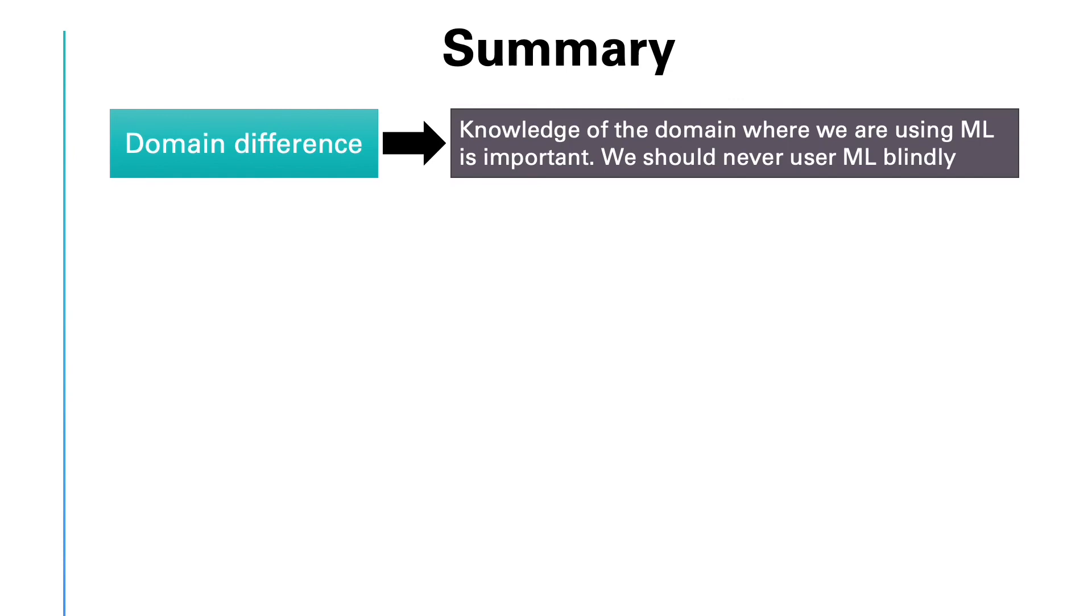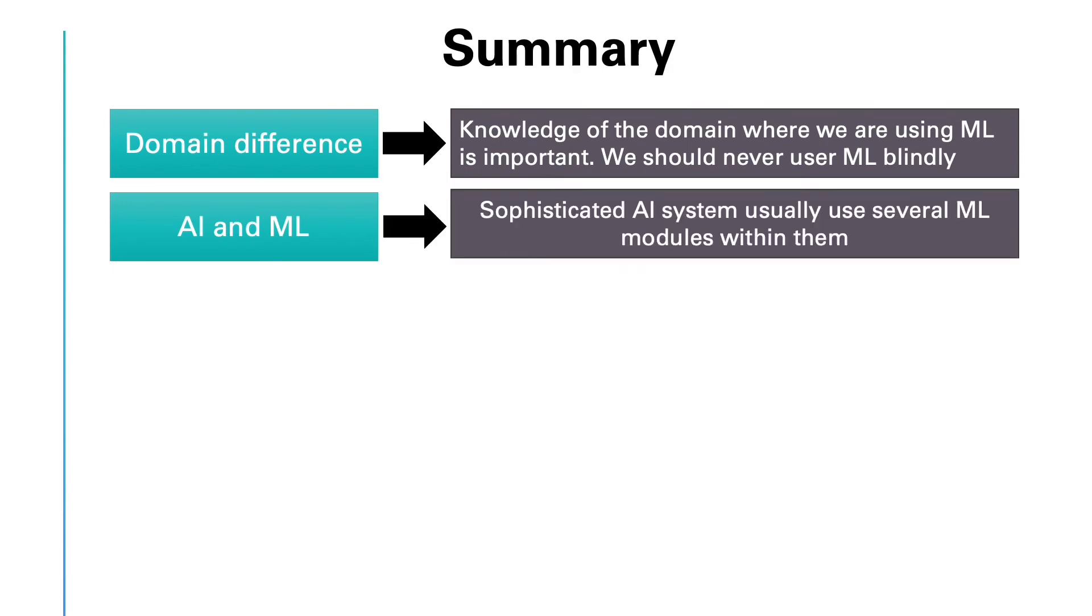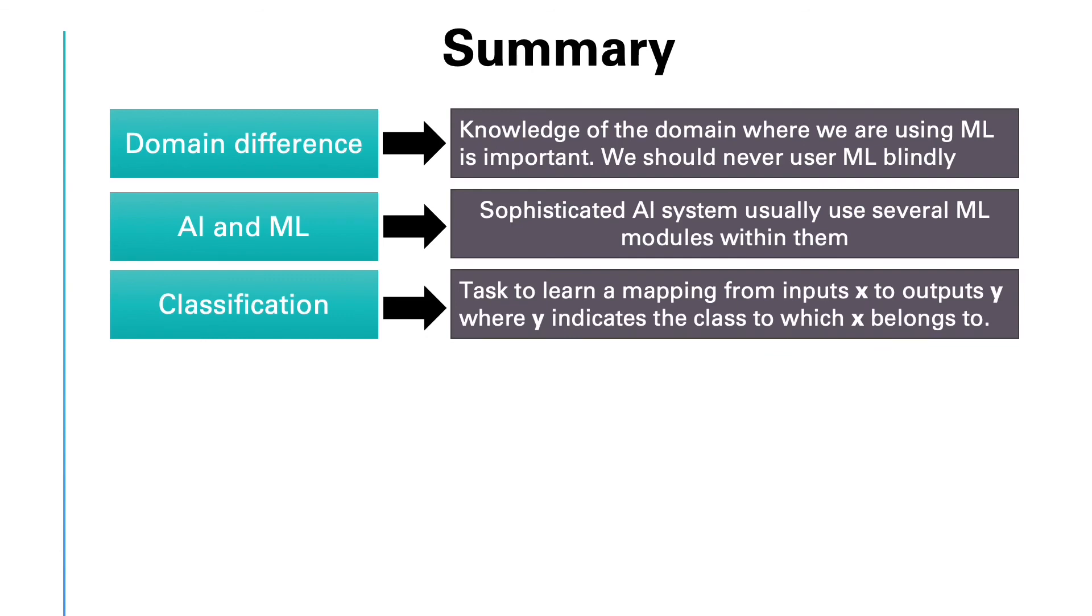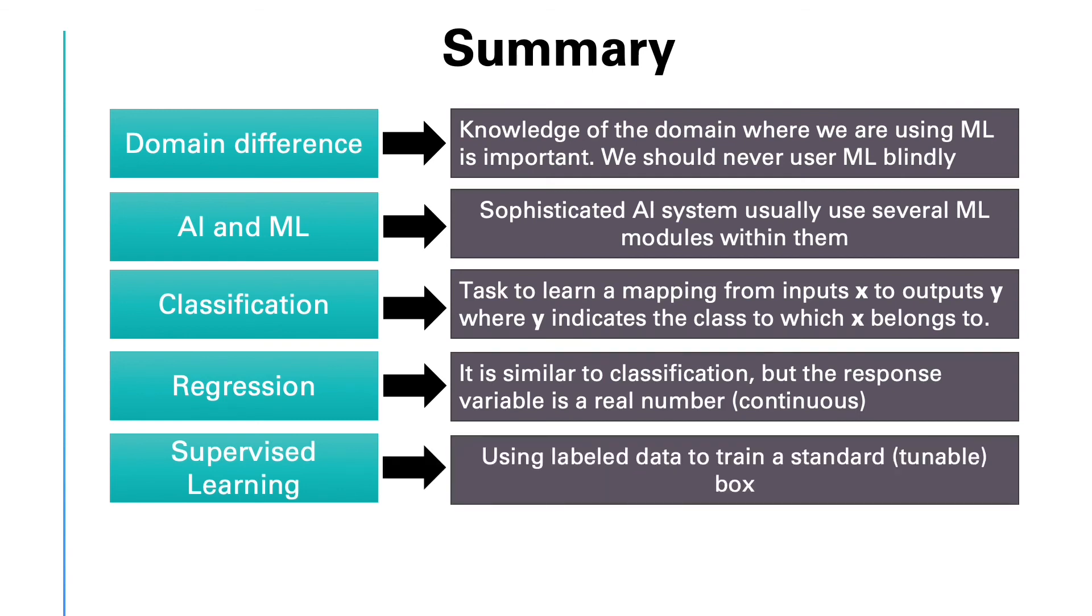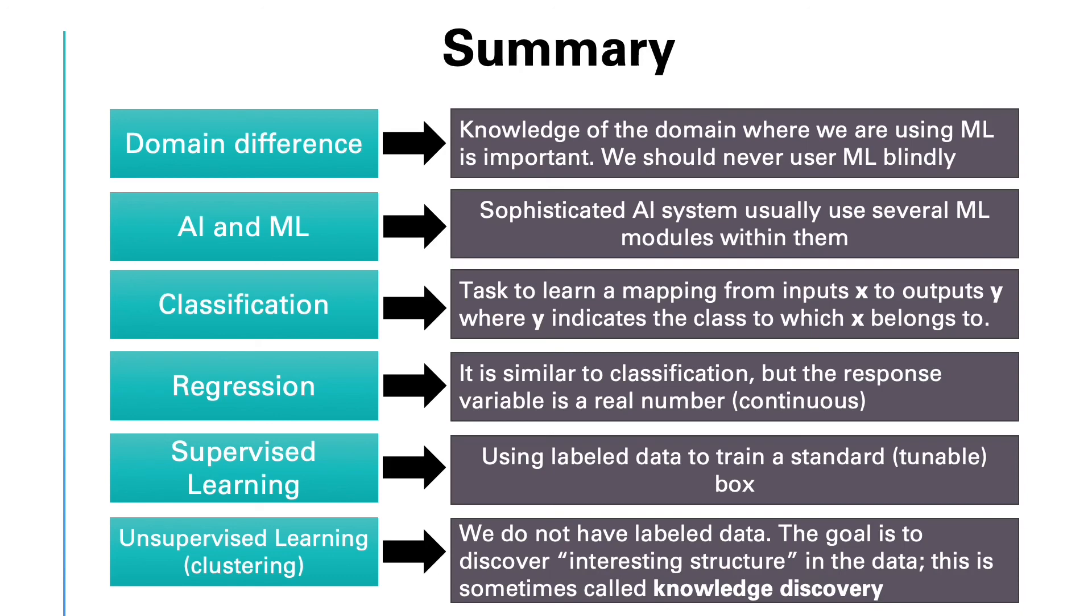In summary, in this video, we talked about the following. We talked about domain differences. We mentioned that the knowledge of the domain where you are using machine learning algorithms is important. We should never use ML blindly. We talked about AI and ML. We mentioned that sophisticated AI systems often use several machine learning modules within them. We mentioned that classification tasks are those in which the goal is to learn a mapping from input x to output y, where y indicates the class that the inputs belong to. We talked about regression. We mentioned that it is similar to classification, but here the response variable is a real number, a numerical value. We reviewed supervised learning, which is using labeled data to train a standard tunable mapping, or box, as we called it. And finally, we discussed unsupervised learning. We mentioned that in unsupervised learning, we do not have labeled data. The goal here is to discover interesting structure in the data, which is sometimes called knowledge discovery. We finally discussed clustering as an important example of unsupervised learning.